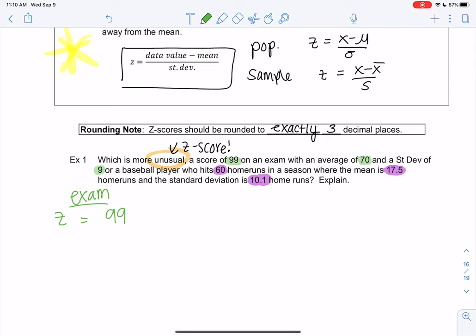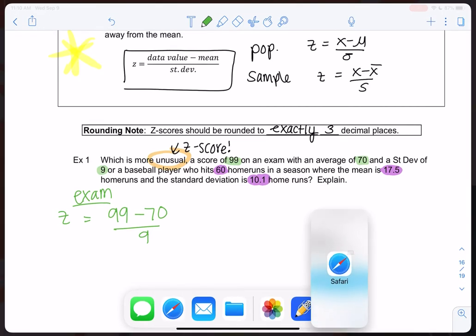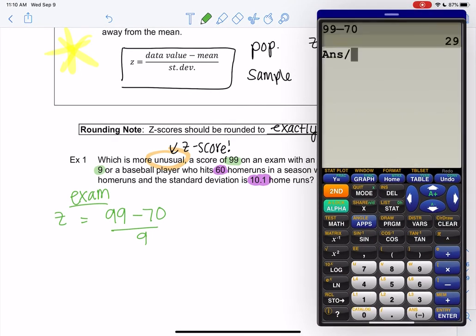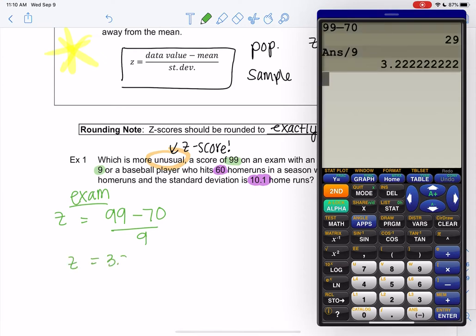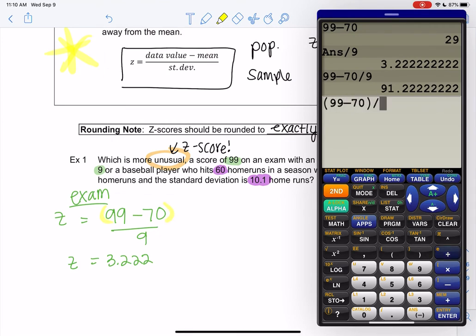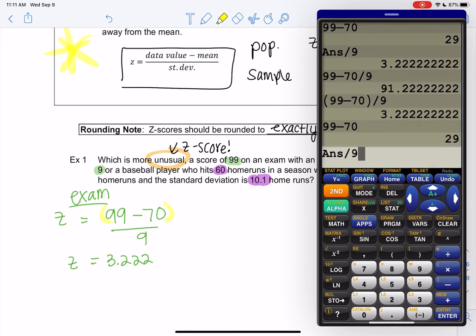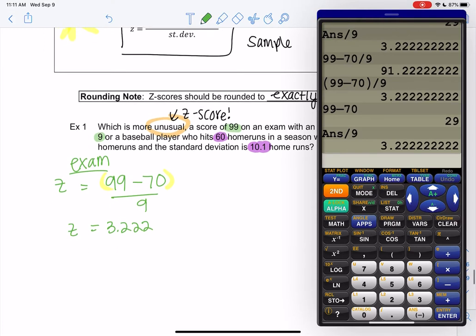So these two things feel totally unrelated, but we can figure out which one is kind of less likely to happen by calculating the z-score. So let's calculate the z-score for the exam. We're going to do the data value, which is 99, minus the average, divided by the standard deviation. And if you're going to use the calculator, you cannot type it all at once unless you add parentheses. So I recommend you do 99 minus 70, enter, divide by 9. So 3.222. If you do 99 minus 70 over 9 incorrectly, notice I get a totally different number. If you do want to do everything at once, you can add parentheses on top or just do it in two steps.